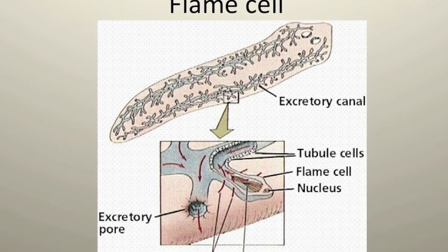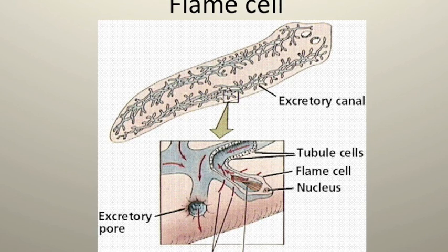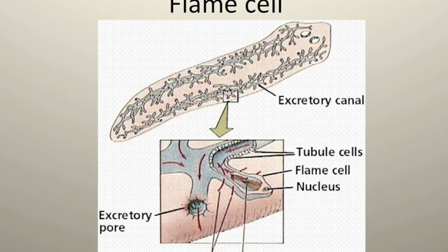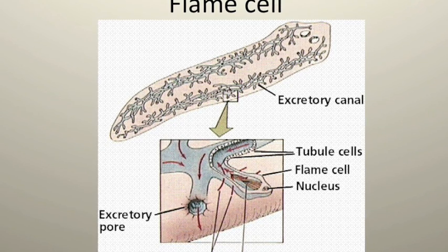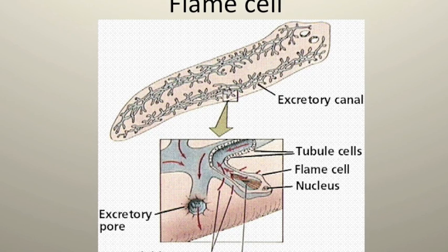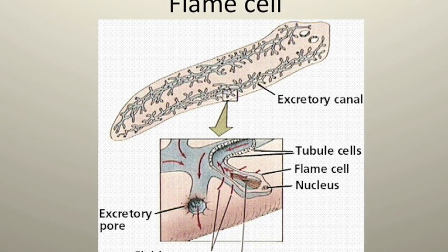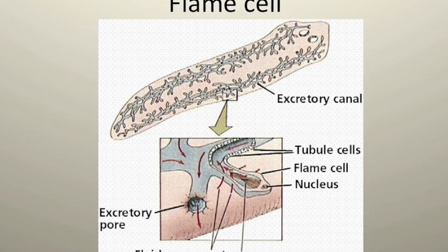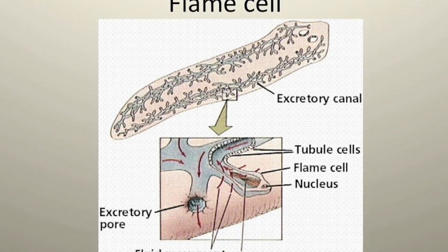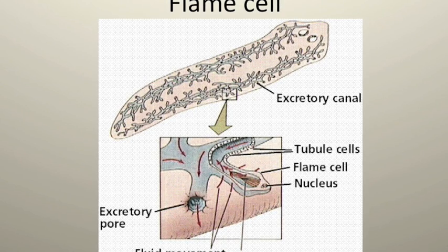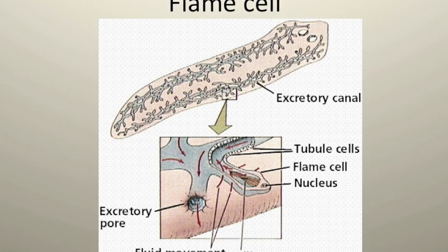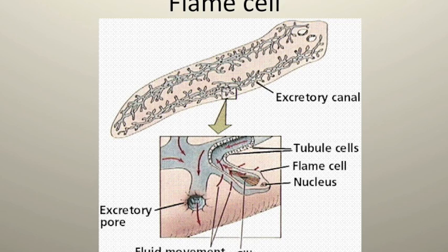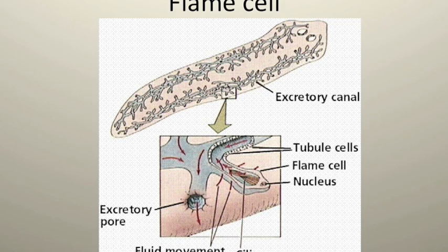The second embryonic tissue layer, the mesoderm, gives rise to the muscles, the primitive kidneys called protonephridia, and the reproductive system. Since these animals do not have a heart, blood vessels, or lungs, their excretory and digestive systems must function throughout their whole bodies. They excrete everything by diffusion, using flame cells and excretory pores to remove waste to the external environment.